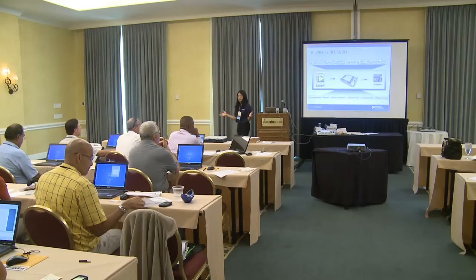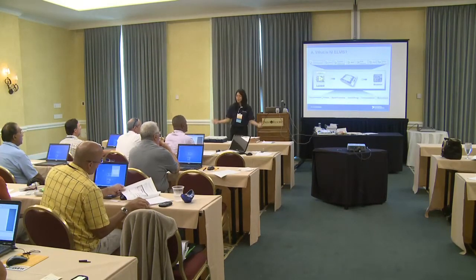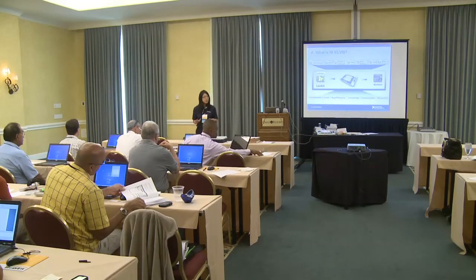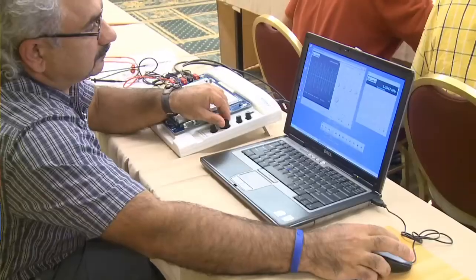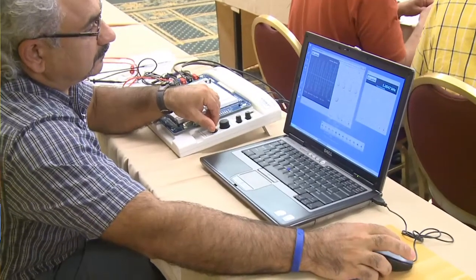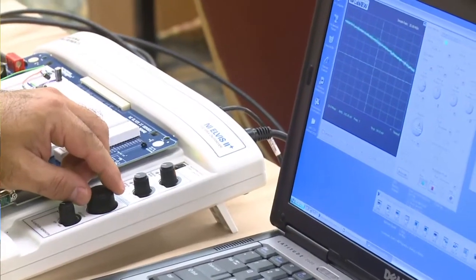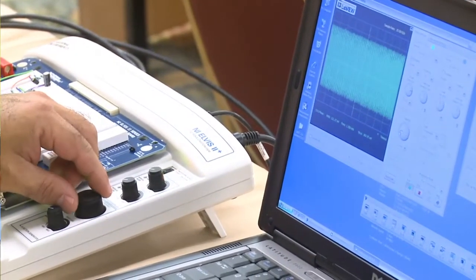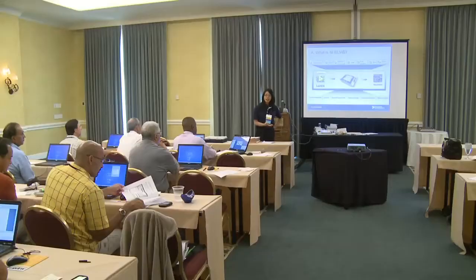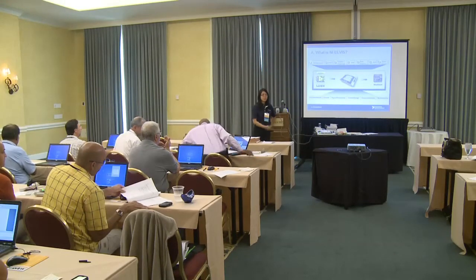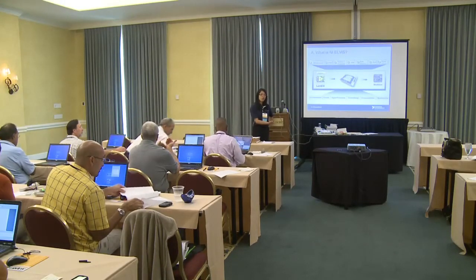So the question is: what is Elvis? What is this mysterious platform that we call NI Elvis? NI Elvis is an instrumentation platform — it contains 12 of your most common instruments. It has your function generator, your oscilloscope, an isolated DMM. Less common instruments like a body analyzer, three-wire, two-wire voltage current analyzers. A DSA are some of the examples of the 12 instruments that are available.